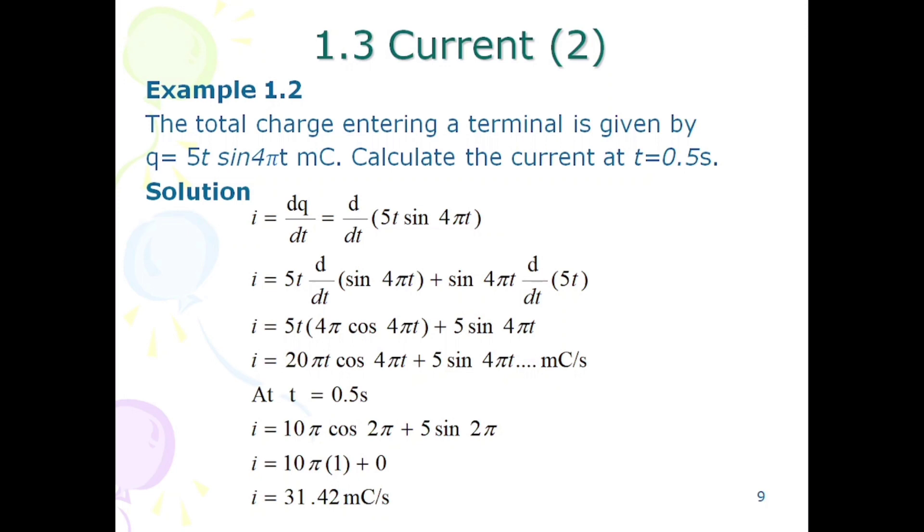The result is i = 20πt cos(4πt) + 5 sin(4πt). The answer is in millicoulombs per second because charge is in millicoulombs and time is in seconds. Substituting t = 0.5s into the equation, the final answer is i = 31.42 mC/s.